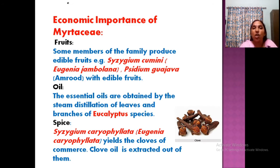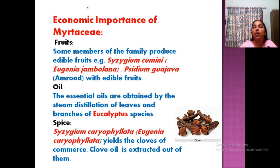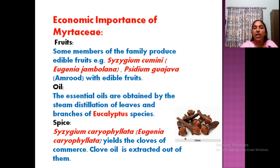Essential oils are obtained from the leaves by distillation. Eucalyptus oil is used for body pain, fever, and headache. One important plant is clove — Syzygium aromaticum, also known as Eugenia caryophyllata. The dried flower bud is used as a spice. This family has economic importance for fruit, oil, and spice.